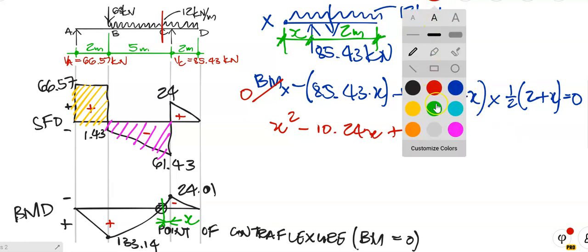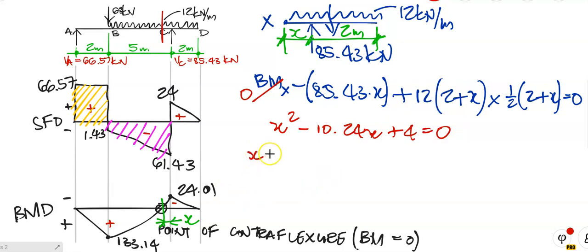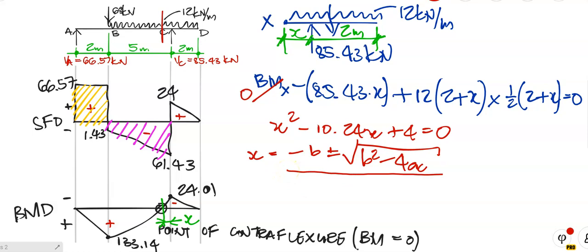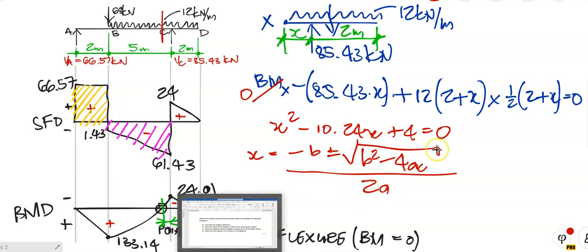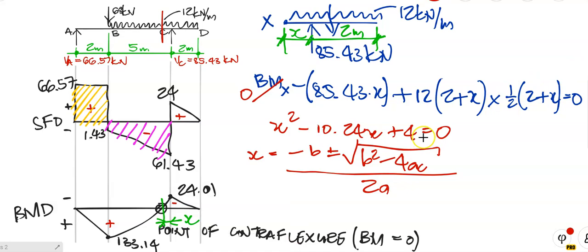The quadratic formula is: X equals minus B plus or minus the square root of (B squared minus 4AC), all over 2A. Where A is plus 1, B is minus 10.24, and C is plus 4. Put those values in and we're going to get two possible answers. Do the maths and check that you get the same as me.